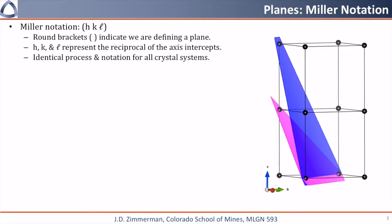We're going to use Miller notation to describe these planes. Miller notation uses round brackets to indicate a single plane, and h, k, and l values, which will be integers to represent the reciprocals of the axis intercepts. The process that we're using is going to be identical, and the notation will be identical for all crystal systems.